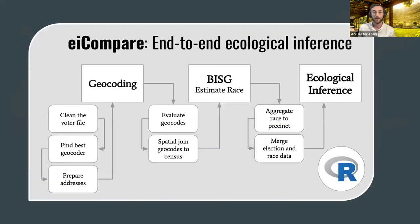EICompare is a software package written in the R programming language that provides functionality for end-to-end ecological inference in the context of elections. EICompare was initially developed prior to this summer by our project leads, Dr. Matt Barreto and Lauren Collingwood. This summer we worked to expand its functionality, add additional statistical robustness, and make it more accessible. Now let's see it in action.